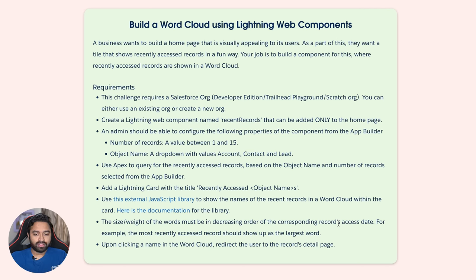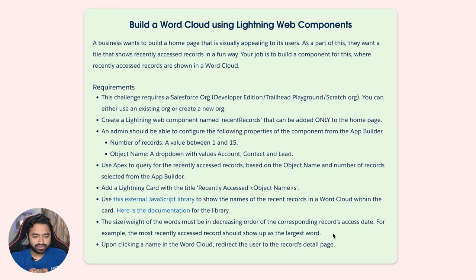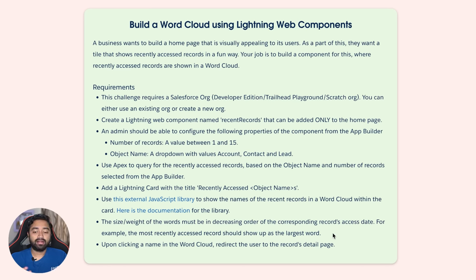Pretty straightforward. Now diving into the requirements: this challenge requires a Salesforce org — you can use an existing org or a new one. We'll try to create a new scratch org. The requirement is to create a Lightning Web Component named 'recent records' that can be added only to the home page. An admin should be able to configure properties from the App Builder.